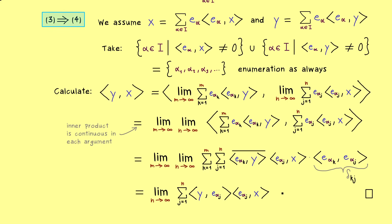So altogether, with that proof you now know that all four statements are equivalent and are known as Parseval's identity. Having an ONB is needed if you want to do all these nice calculation rules. What we can actually do with that I will show in some future videos. I hope to meet you there again — have a nice day, bye bye.